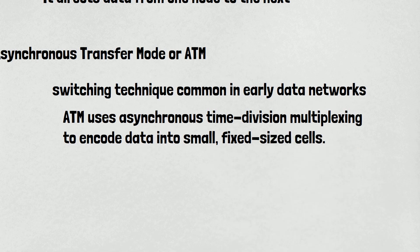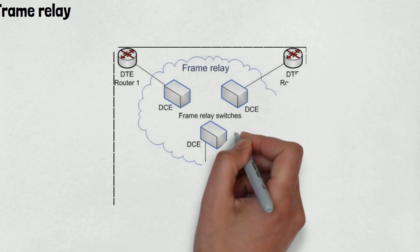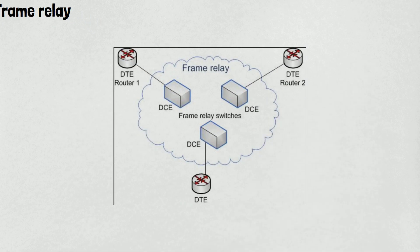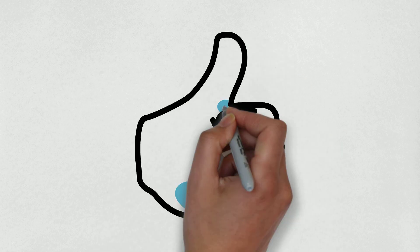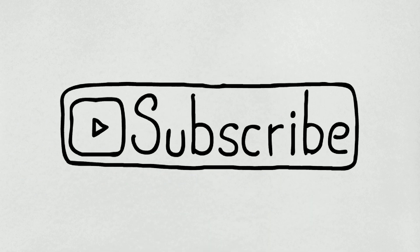Number 8 is Frame Relay. Frame relay packages data in frames and sends it through a shared frame relay network. Each frame contains all necessary information for routing it to its destination. Frame relay's original purpose was to transport data across telecom carriers' ISDN infrastructure, but it's used today in many other networking contexts. That's all for now. Thank you for watching. If you like this video, give it a thumbs up, share it with your friends, and don't forget to subscribe to the channel.